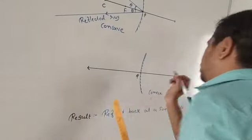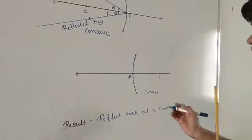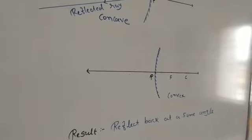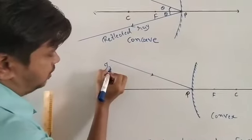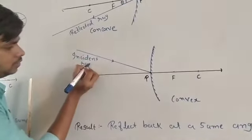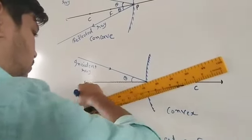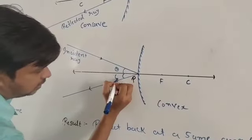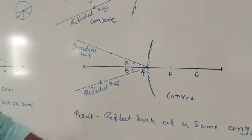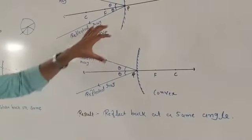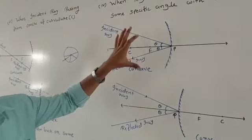The same thing occurs with the convex mirror. The center of curvature C is placed at the center, and F is exactly at the midpoint. When a ray is incident on the pole at angle theta, it reflects back at the same angle theta. So the result is: when the ray is incident on the pole at some specific angle, it reflects back at the same angle, according to the law of reflection.